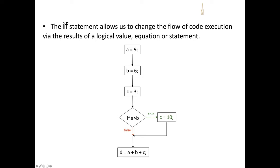We can test our condition and we know that 9 is greater than 6. So our new value for C is no longer 3 — we've reassigned it to be 10. After the branch, programming will continue, and the new sum will include 9 plus 6 plus 10 instead of 9 plus 6 plus 3. This illustrates how an if statement can provide different avenues of operations.